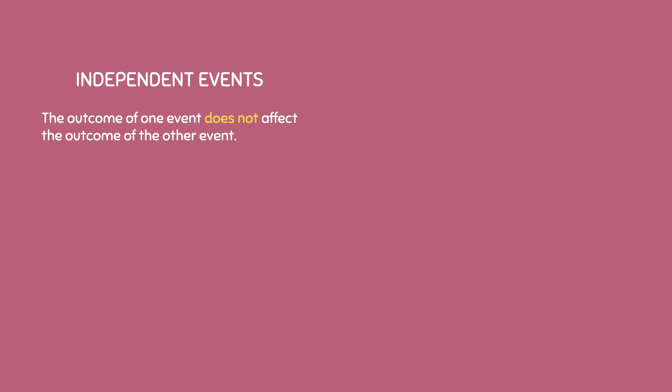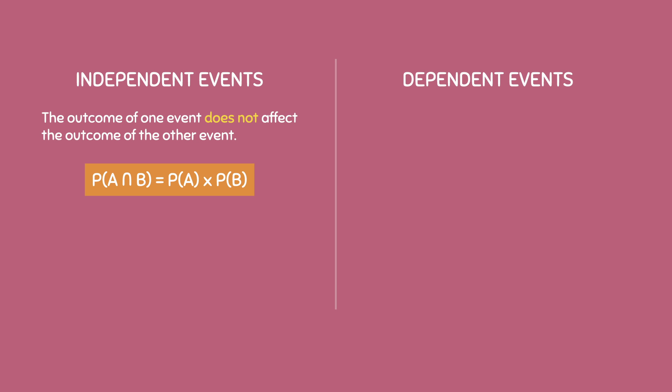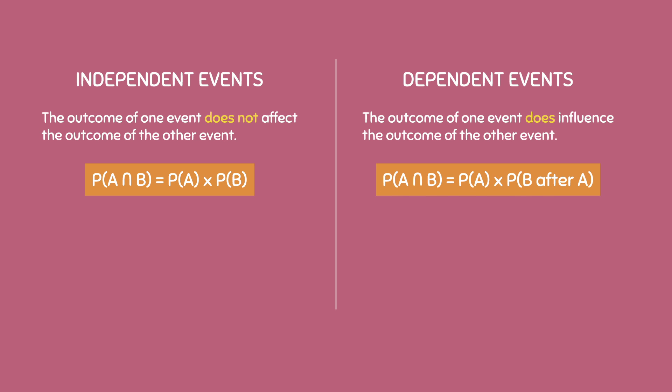To quickly recap: for independent events, the outcome of one event does not affect the outcome of the other event. If events A and B are independent, the probability of A and B occurring is equal to the probability of A times the probability of B. For dependent events, the outcome of one event does influence the outcome of the other event — this is commonly seen when drawn items are not returned. If events A and B are dependent, the probability of A and B occurring is equal to the probability of A times the probability of B after event A has occurred.